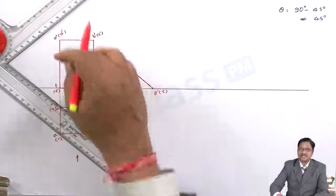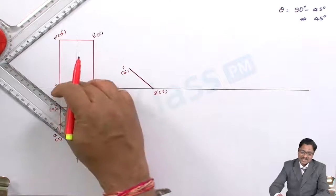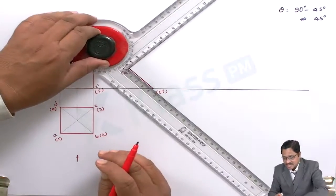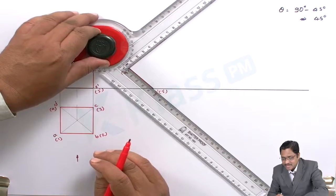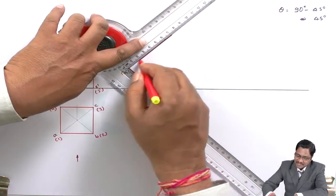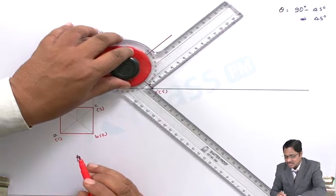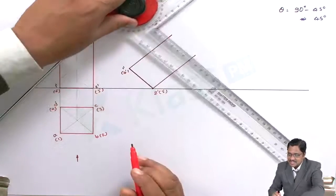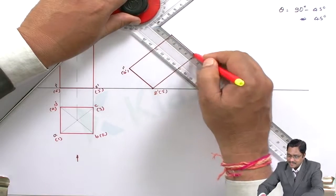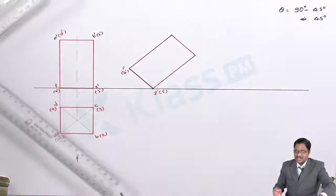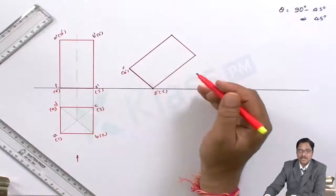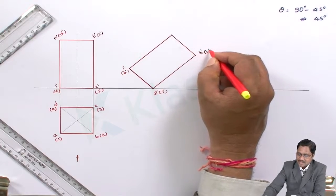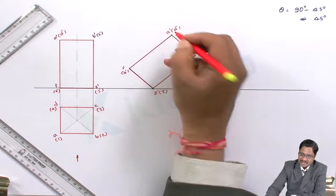Now identify the ABCD surface — it is perpendicular to the base and equal to the height of 70 mm. Using the set square, draw perpendiculars at each end of the base edge with length equivalent to the prism height of 70 mm, then close that side. The same figure is now constructed in the new inclined position. Label the points as B dash, C dash on one side and A dash, D dash on the other.